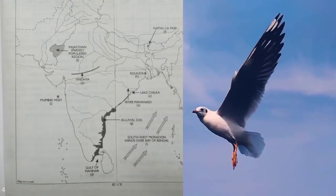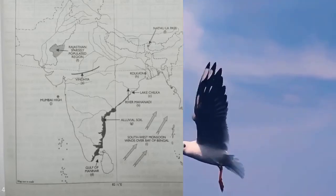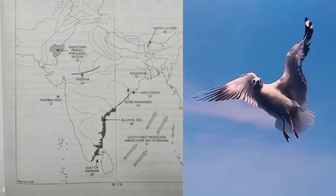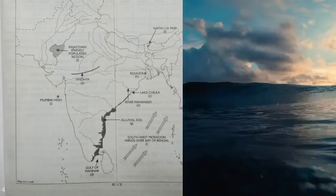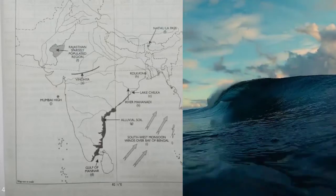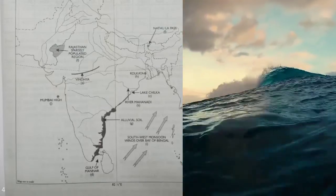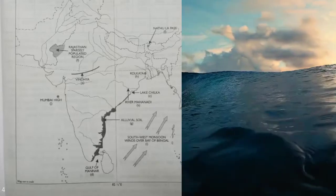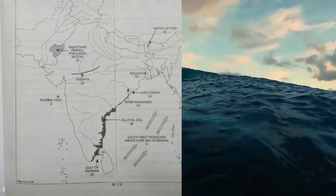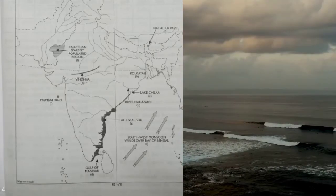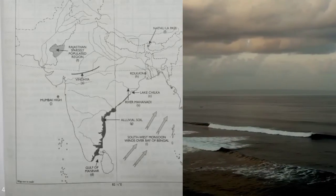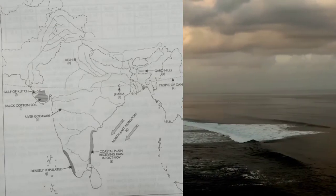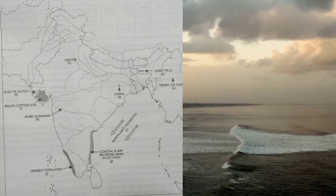Next map: 'A' — draw and name the Standard Meridian of India. 'B' — label the river Mahanadi. 'C' — mark and name Chilka Lake. 'D' — mark and name the Gulf of Mannar. 'E' — mark and name the Vindhya Mountains. 'F' — mark a sparsely populated region in western India. 'G' — mark a region of alluvial soil in South India. 'H' — mark and name Kolkata. 'I' — mark with an arrow and name the southwest monsoon winds over the Bay of Bengal. 'J' — mark and name Mumbai High.